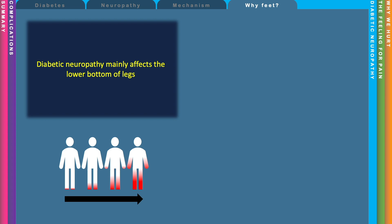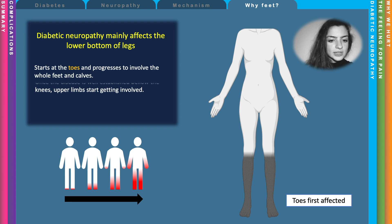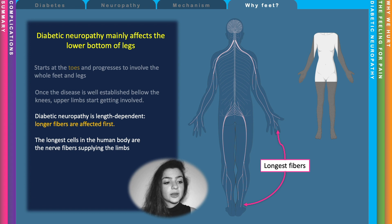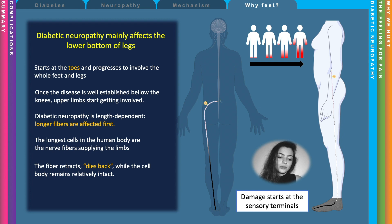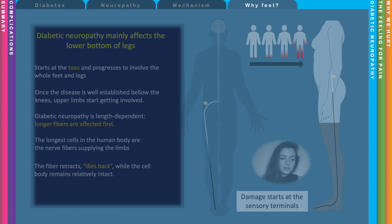Diabetic neuropathy mainly affects the lower part of the legs. It starts at the toes and progresses to involve the whole foot and calves, and once well established below the knee, it starts affecting the upper limb as well. The reason these nerve fibers are specifically affected is because diabetic neuropathy is length-dependent, and the longest cells in the body are these nerve cells. The disease progresses this way because the neuron dies back — starting from the periphery upwards toward the center of the body.